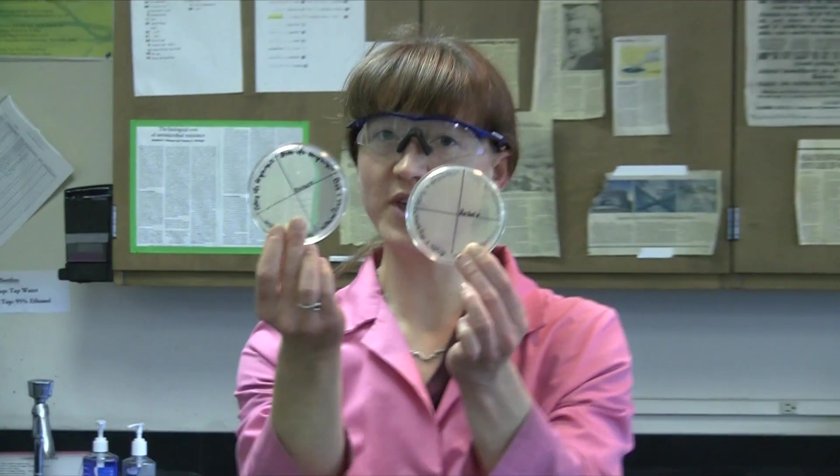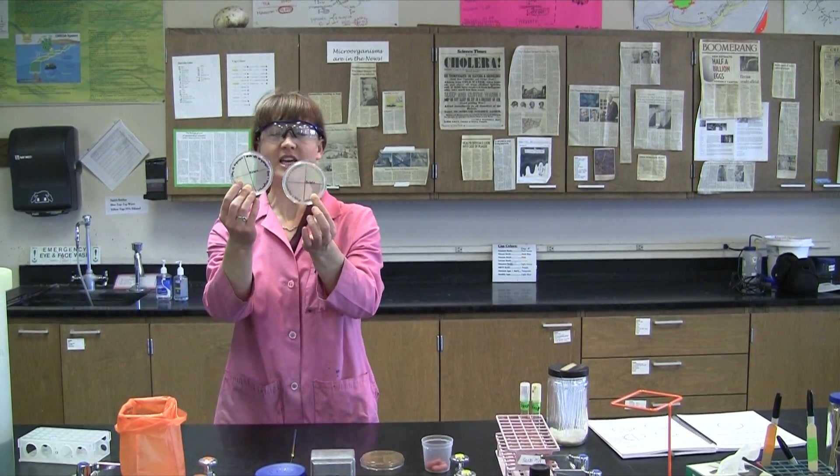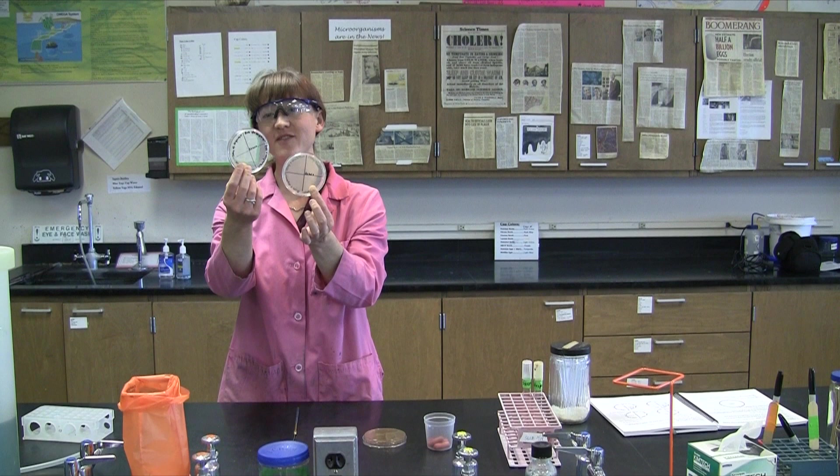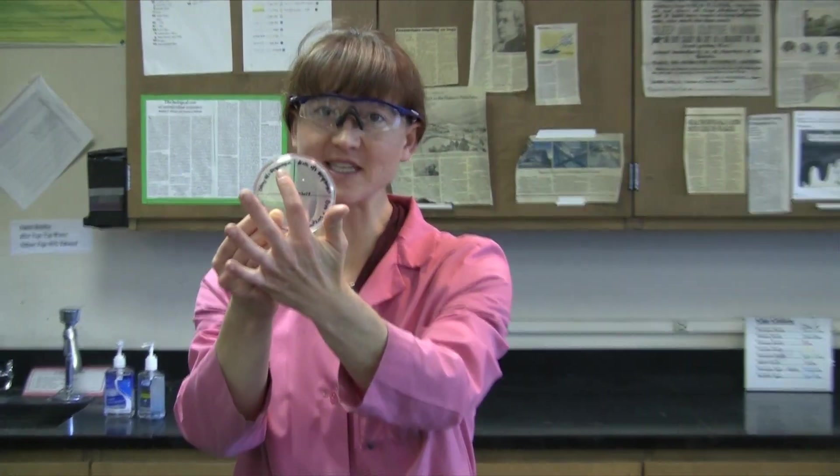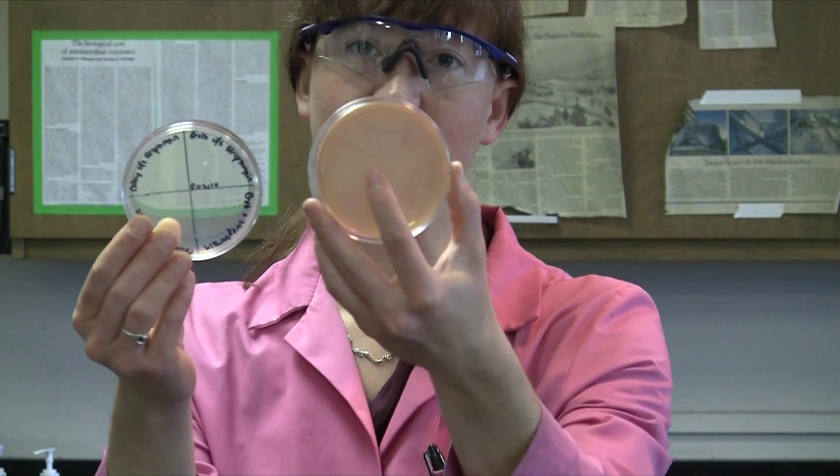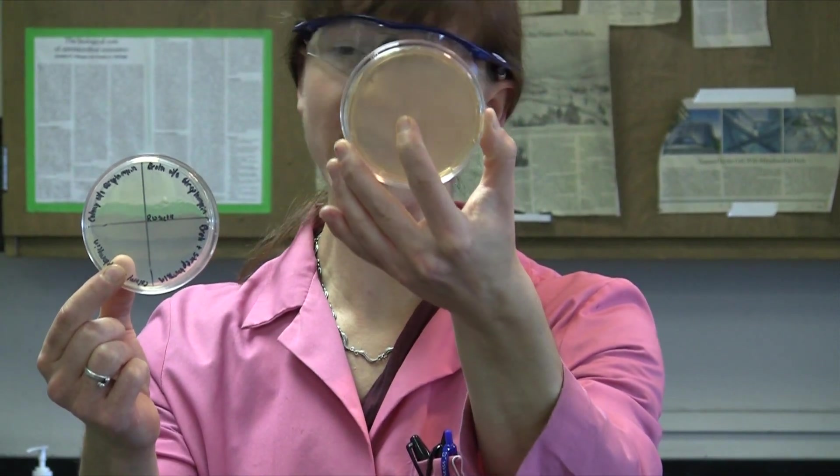And so onto both of these plates, we actually want to streak all four of our samples. So we're going to need four quadrants on each one of the plates, and that's what I've done. I've already labeled these. So I have one that's labeled, one of the quadrants is labeled colony without streptomycin. That means we're going to take from the plate to put on there, the one without streptomycin. Then we've got one labeled colony plus streptomycin, and that one we're going to put a colony from this plate, from the mutant plate.